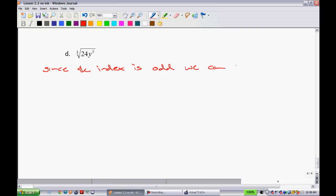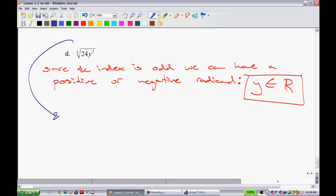So since the index is odd, we can have a positive or negative radicand. So what that means is that y can be anything. When we say y can be anything, that just looks like this: y is a member of the reals. So that would be a restriction. Now, simplify this guy.